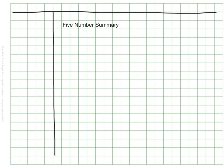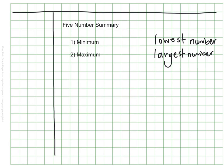The five-number summary has, of course, five pieces in it. The first item is the minimum — the lowest number in a set of data. In addition to the minimum, there is a maximum, which is the largest number in your data. Once you have your minimum and maximum, you also need the median — that's something we already know how to find. It's the halfway point, or middle number, of all the values in the data set.